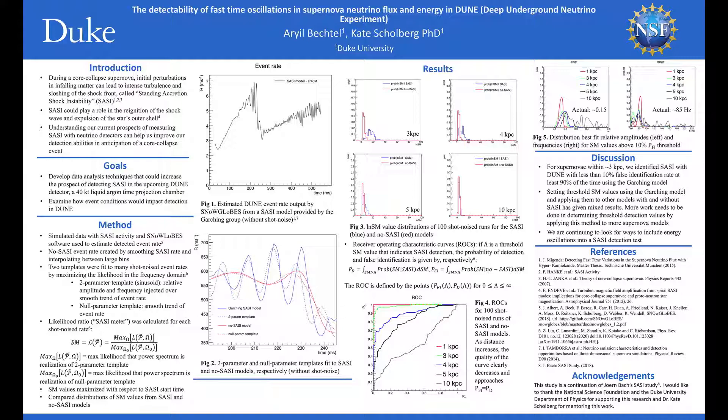As you can see, the two distributions are distinguishable within about 3 kiloparsecs, and less so at 4 or more kiloparsecs. In Figure 5, we also see how the precision in estimating the frequency and relative amplitude of oscillation decreases with increased distances.